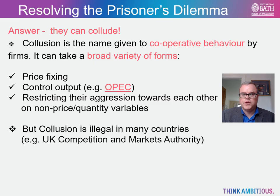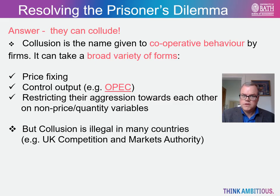Collusion can also involve tacitly restricting aggression on non-price variables such as R&D expenditure or advertising. The problem is that business collusion is now illegal. In the UK, for instance, we have the Competition and Markets Authority to oversee market competition and take action where cases of collusion arise. In many countries, companies can be heavily fined if caught engaging in collusion, and in some cases senior executives can be sent to prison. There have been several high-profile cases in recent years involving toy manufacturers, school fees, airline pricing, truck manufacturers, financial markets, and salt extraction companies.